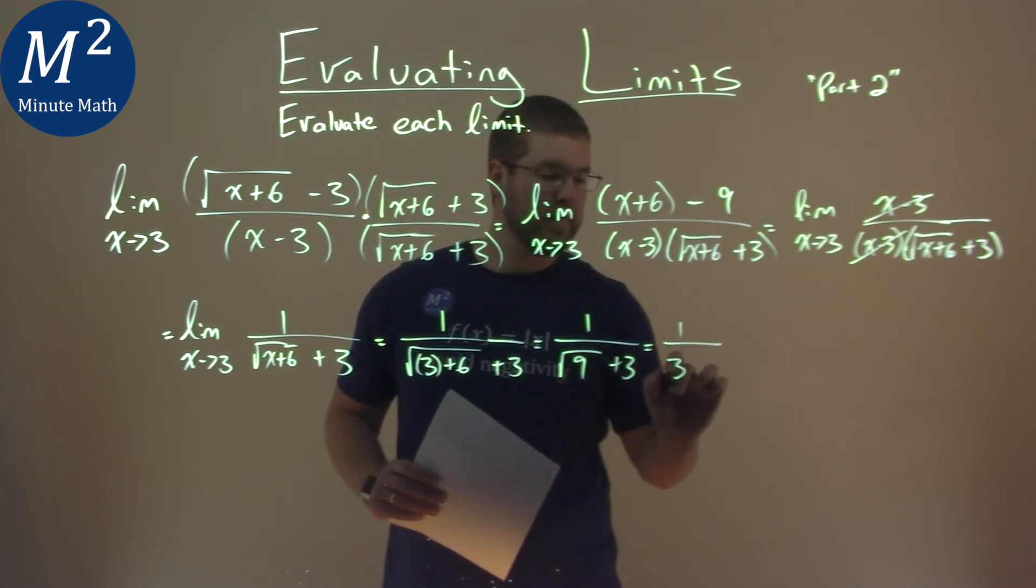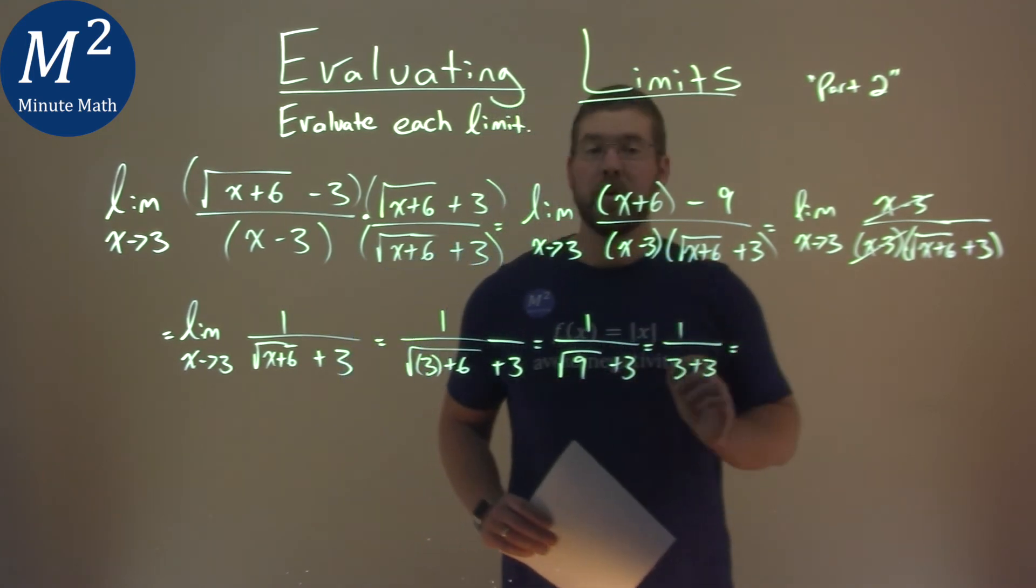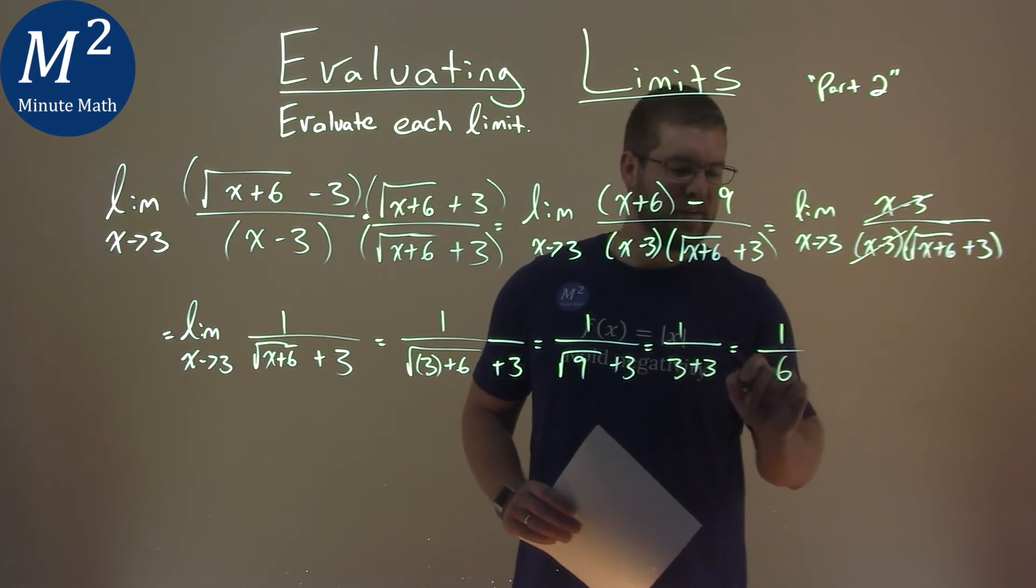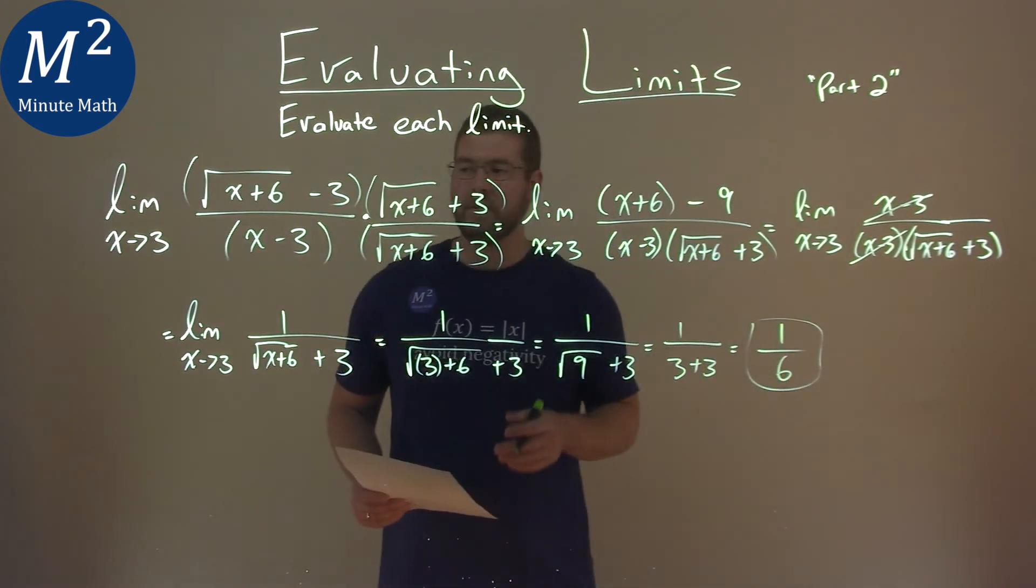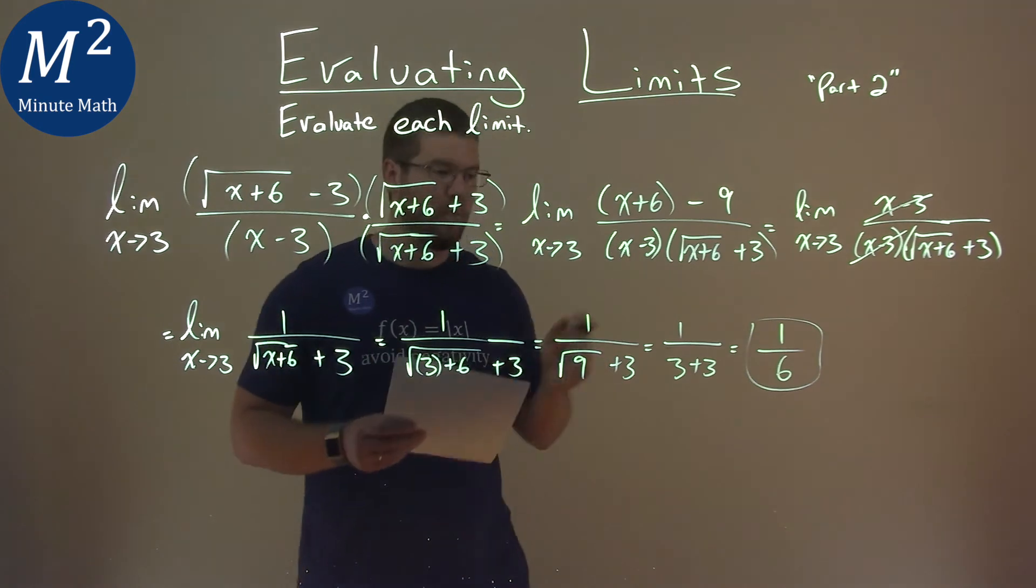Square root of 9 is 3 and 3 plus 3 is 6. So we have 1 over 6 here. And so our final answer is this limit is equal to 1 sixth.